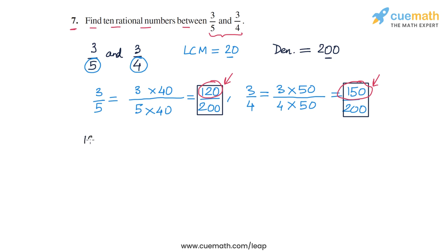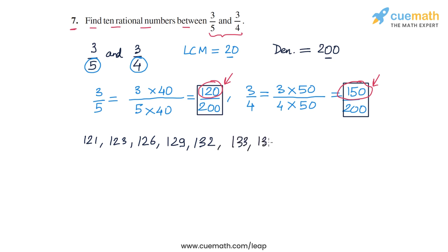Let's pick any 10 integers at random: 121, 123, 126, 129, 132 — that's five — then 133, 137, 140, 141, and 149. I have picked 10 integers at random between 120 and 150.